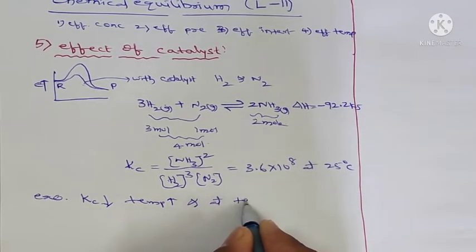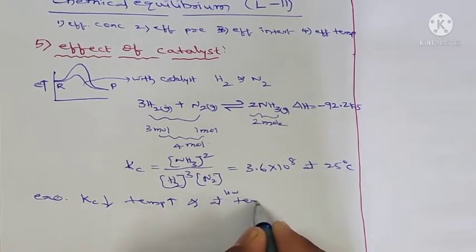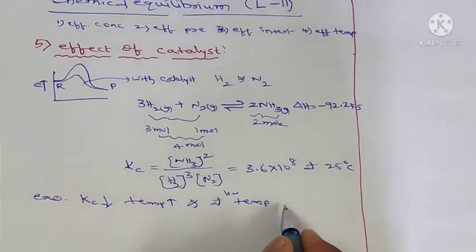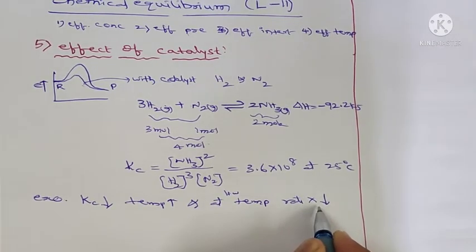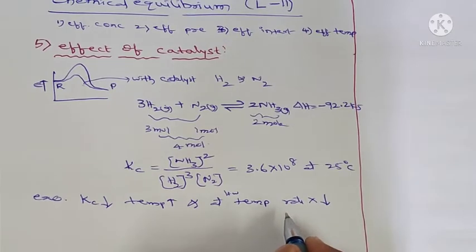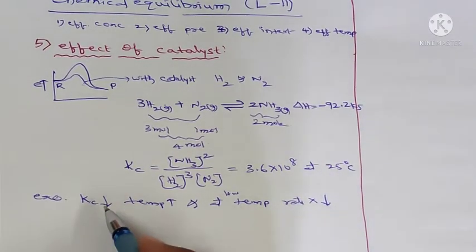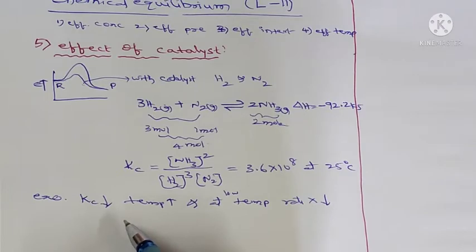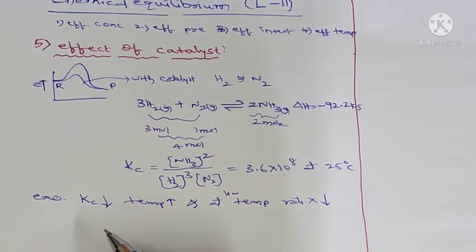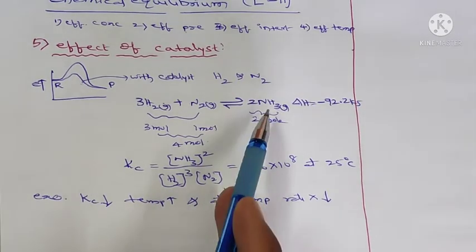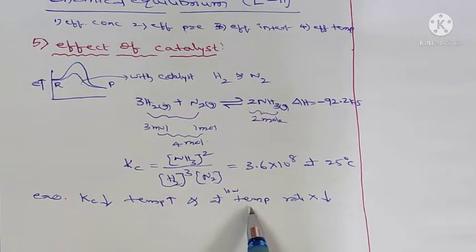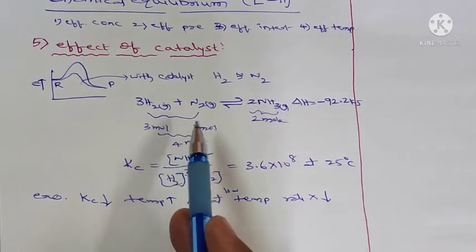At low temperature, the rate of reaction decreases and it takes a long time to reach equilibrium. At high temperature, the rate of reaction increases and it takes less time to reach equilibrium. So there are two problems: at high temperature the product yield will be poor, and at low temperature the rate of reaction is very slow.